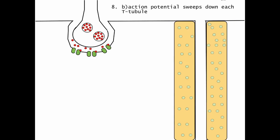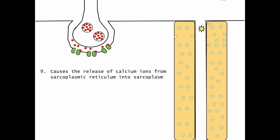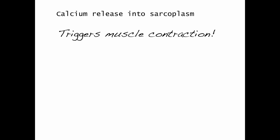As the action potential sweeps down each T-tubule, this is going to cause the release of calcium ions from the sarcoplasmic reticulum. And calcium release into the sarcoplasm is going to trigger muscle contraction.